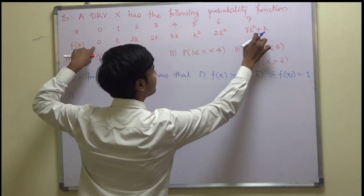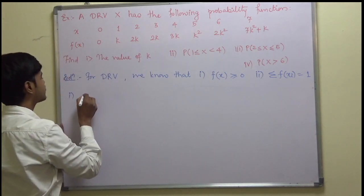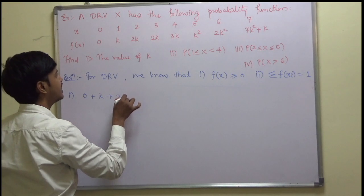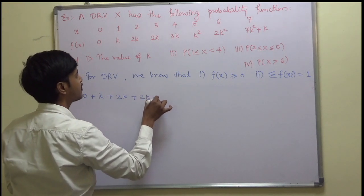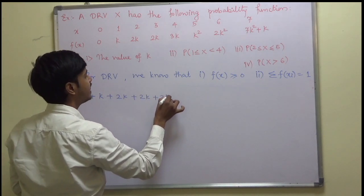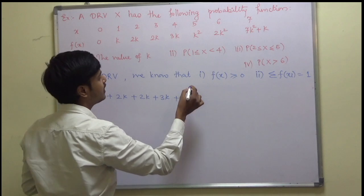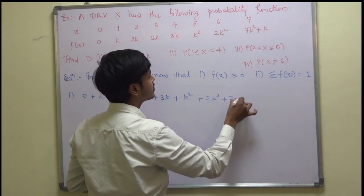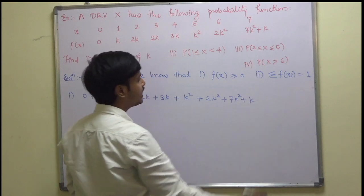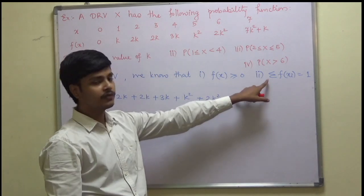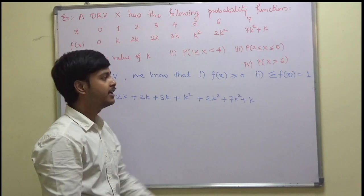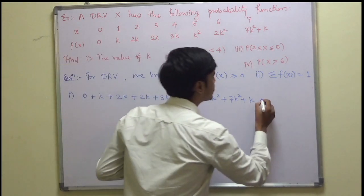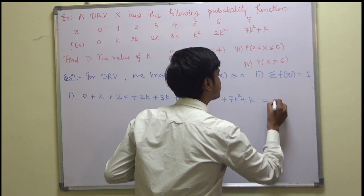Using the definition, we write: 0 + k + 2k + 2k + 2k + 3k + k² + 2k² + 7k² + k. Using the definition of the probability function — sum of all probabilities equals 1 — this comes out to be 1.